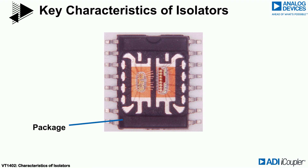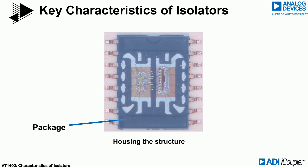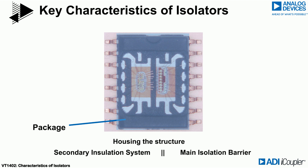The chip package houses the entire structure, but also becomes a secondary insulation system in parallel with the main isolation barrier. Its characteristics may limit the performance of the isolator in certain conditions.